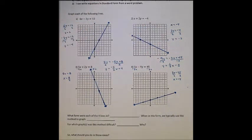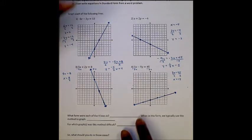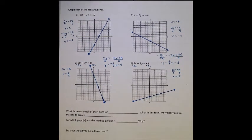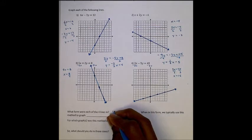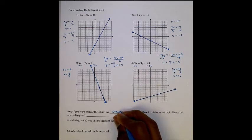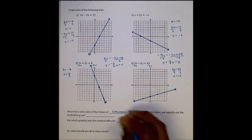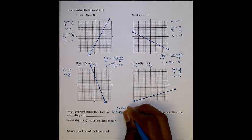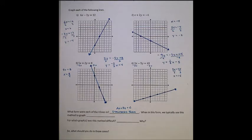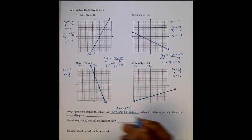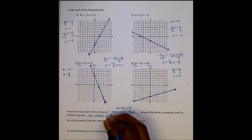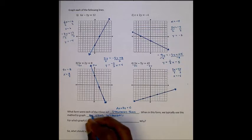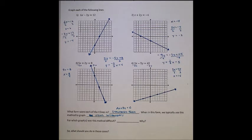So we spent a few minutes here just graphing different lines. The question at the bottom, which form were each of the four lines in? Hopefully you noticed that they all started off with x and y on the same side, and so they were all in standard form. Remember, standard form is ax plus by equals c. When in this form, we typically graph using intercepts. And that's what we did for numbers 1 and 2.